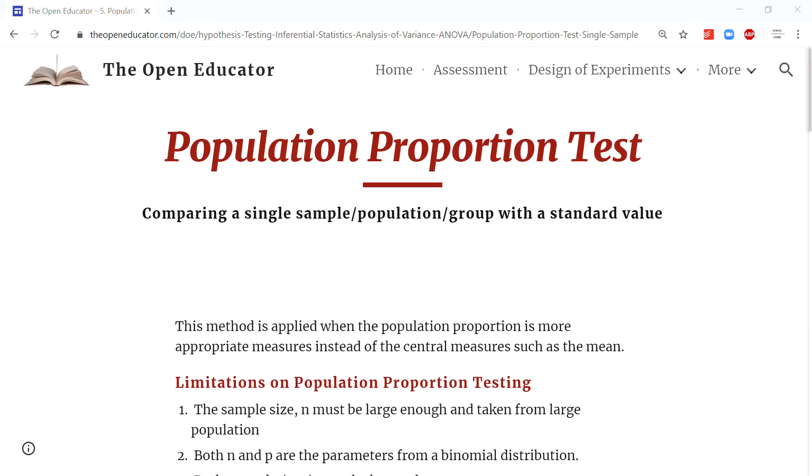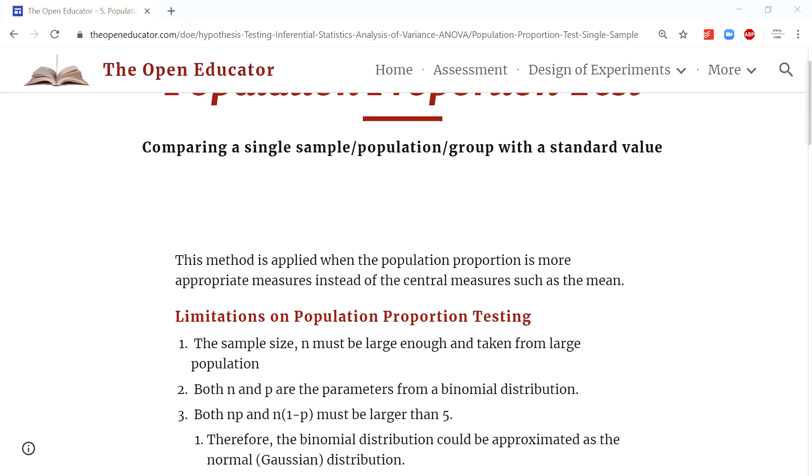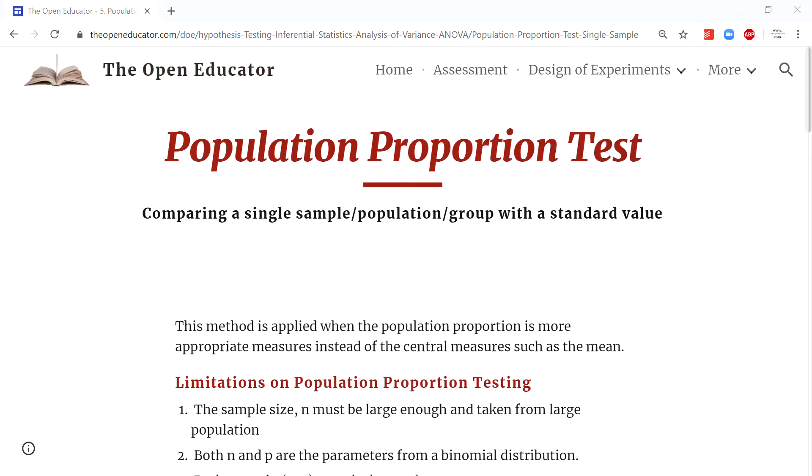Single sample population proportion test: when to apply it, how to analyze the data, and how to explain the result in the context of the problem. When the mean or the standard deviation are not the appropriate measure for a population, for example the unemployment rate, infection rate from a virus, death rate, any rate or proportions or percentage, typically a proportion test is appropriate.